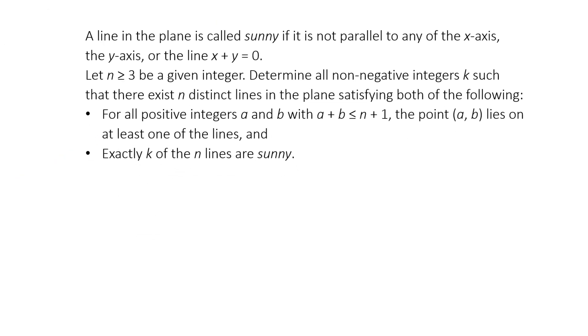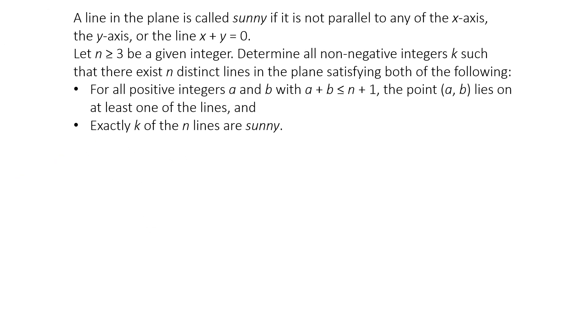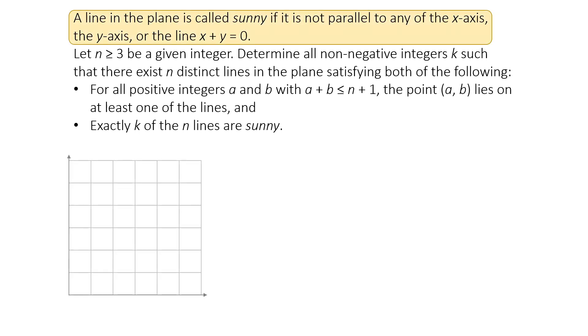Let's take some time to really understand this question. We're working with lines on a coordinate plane, and there's a special rule. A line is called sunny if it's not parallel to the x-axis, the y-axis, or the line x plus y equals 0, which is a 45 degree line sloping downwards.